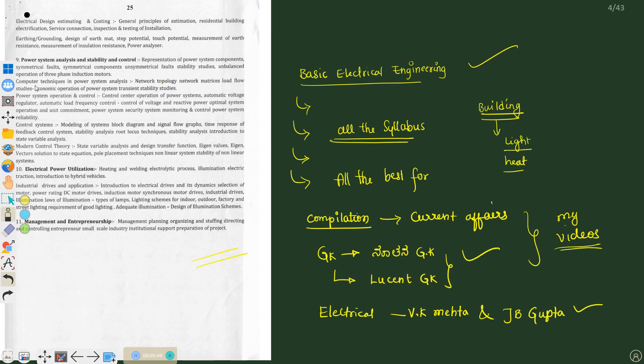Here we have computer techniques (CTPS), network topology, network matrices, everything we have there. Modeling of system, block diagram of signal flow graphs and time response - here we have control system. They have mentioned control system as a subtopic; control system is a subject, but they have mentioned it in power system analysis and stability control concept. Modeling of system, block diagram reduction (BDR) and signal flow graphs (SFGs), time response of the feedback control system, stability analysis, root locus, introduction to state space, state space variables, modern control theory (MCT), state variable analysis.